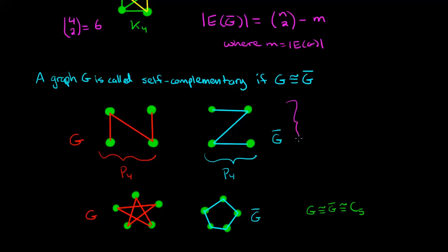In the first example, n choose 2 equals 4 choose 2 which is 6, and each of g and g bar had three edges. In the second example, 5 choose 2 is 10, which is the number of edges of the complete graph of order 5, and each of g and g bar have five edges.